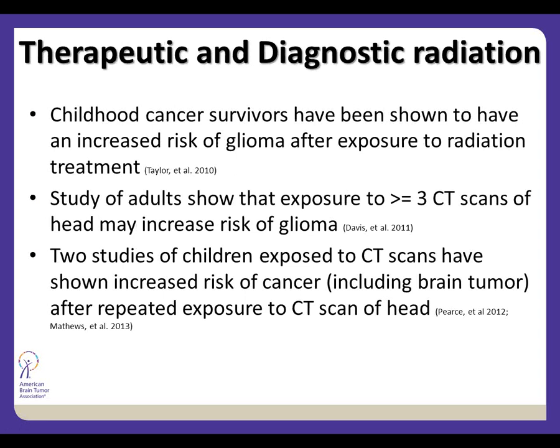Childhood cancer survivor studies — large studies in both the United States and Europe — show that children who received ionizing radiation have an increased risk of glioma as adults. Researchers have also looked at how many CT scans children had and whether that's associated with glioma risk as adults, and there is evidence that the number of CT scans — which involve radiation — is associated with increased cancer risk, including brain tumors.